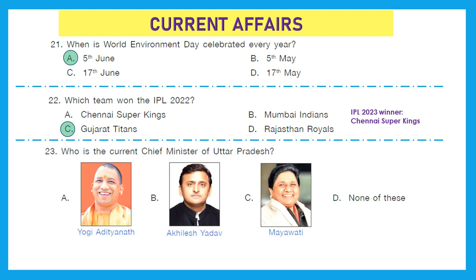Question 23: Who is the current Chief Minister of Uttar Pradesh? Is it Yogi Adityanath, Akhilesh Yadav, Mayawati, or none of these? The right answer is option A, Yogi Adityanath.